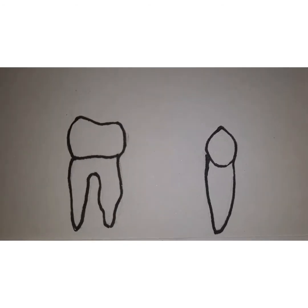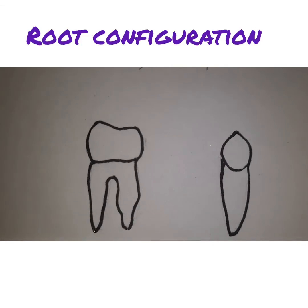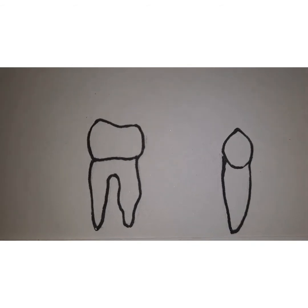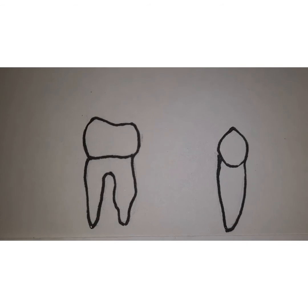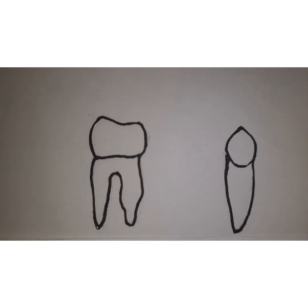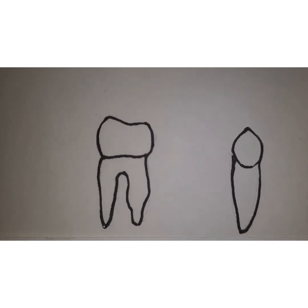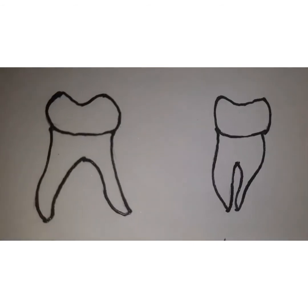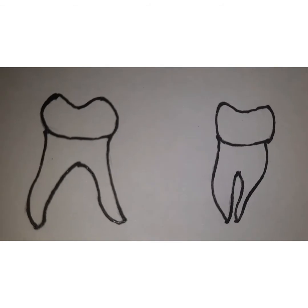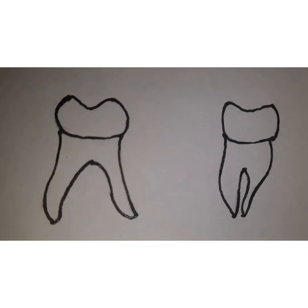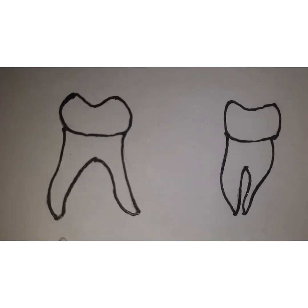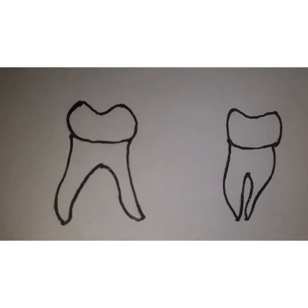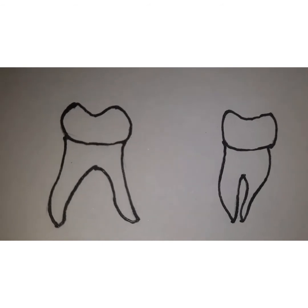Another factor affecting abutment selection is root configuration. Multi-rooted posterior teeth provide better support than single-rooted anterior teeth because they have a greater surface area, a broader occlusal table, and greater bone support. Posterior teeth with divergent roots are much better than those with convergent or fused roots, as divergent roots provide superior bone support. If a posterior tooth is available as an abutment, it should always be preferred.